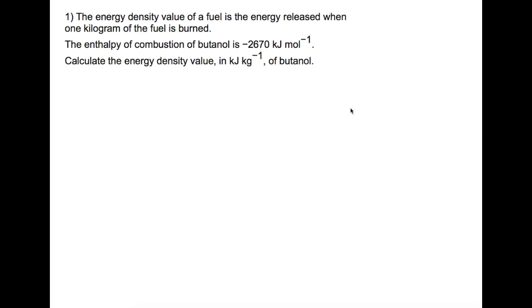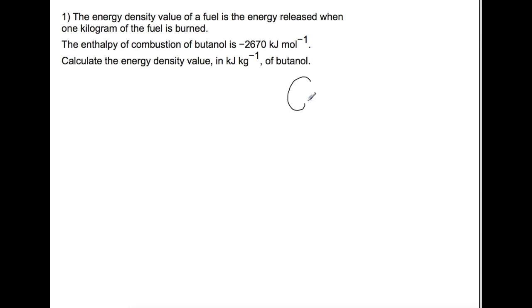In this question you're given the definition for the energy density of a fuel as the value of energy that is released when one kilogram of the fuel is burned. You're given the enthalpy of combustion of butanol as -2670 kilojoules per mole, and you're to calculate the energy density in kilojoules per kilogram. So to go from moles to a mass, then we must need the gram formula mass. At the side we're going to first of all write out the formula for butanol and work out the gram formula mass.